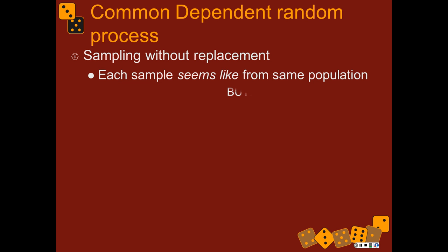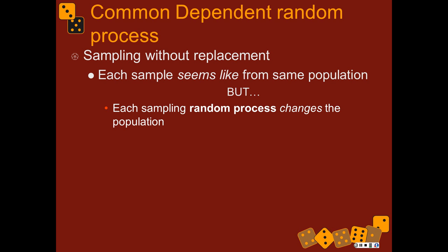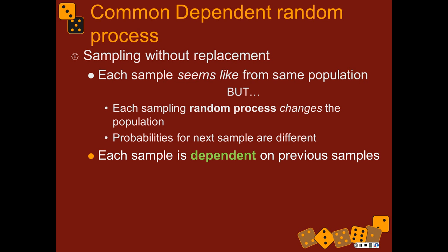A common dependent random process is sampling without replacement. Each sample seems like it's from the same population; however, each random process that happens changes the population itself. Therefore the probabilities for the next random process — the next sample — are different. This isn't just for sampling; it applies to anything where the way one thing happens changes the probabilities of something else happening. Those things are dependent on each other, and each sample is dependent on what happened in the previous samples.